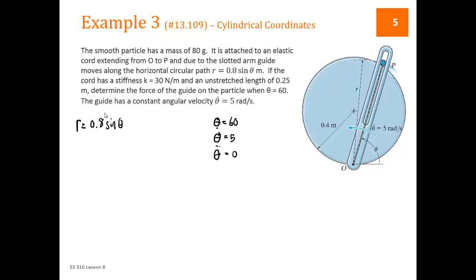If r is 0.8 sine theta, at theta equal to 60, r is going to equal 0.6928. So that's just plugged in 60 into this expression.